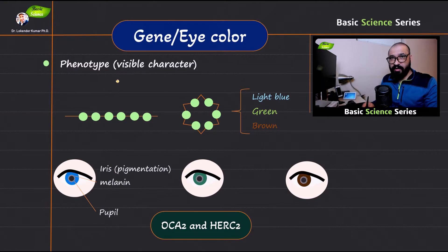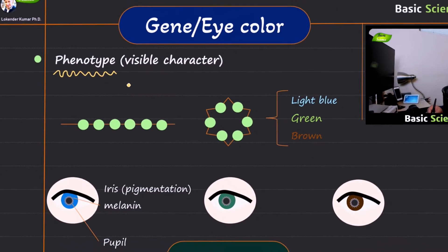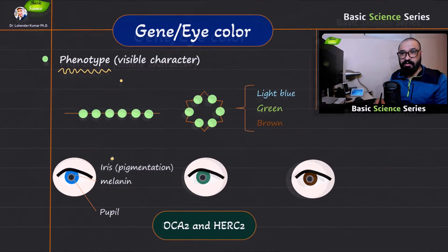Now we are on our second slide where you can see I have written a word known as phenotype. Phenotype is the visible character of a specific individual. It can be the height of a plant. In this particular example is the color of the iris here.